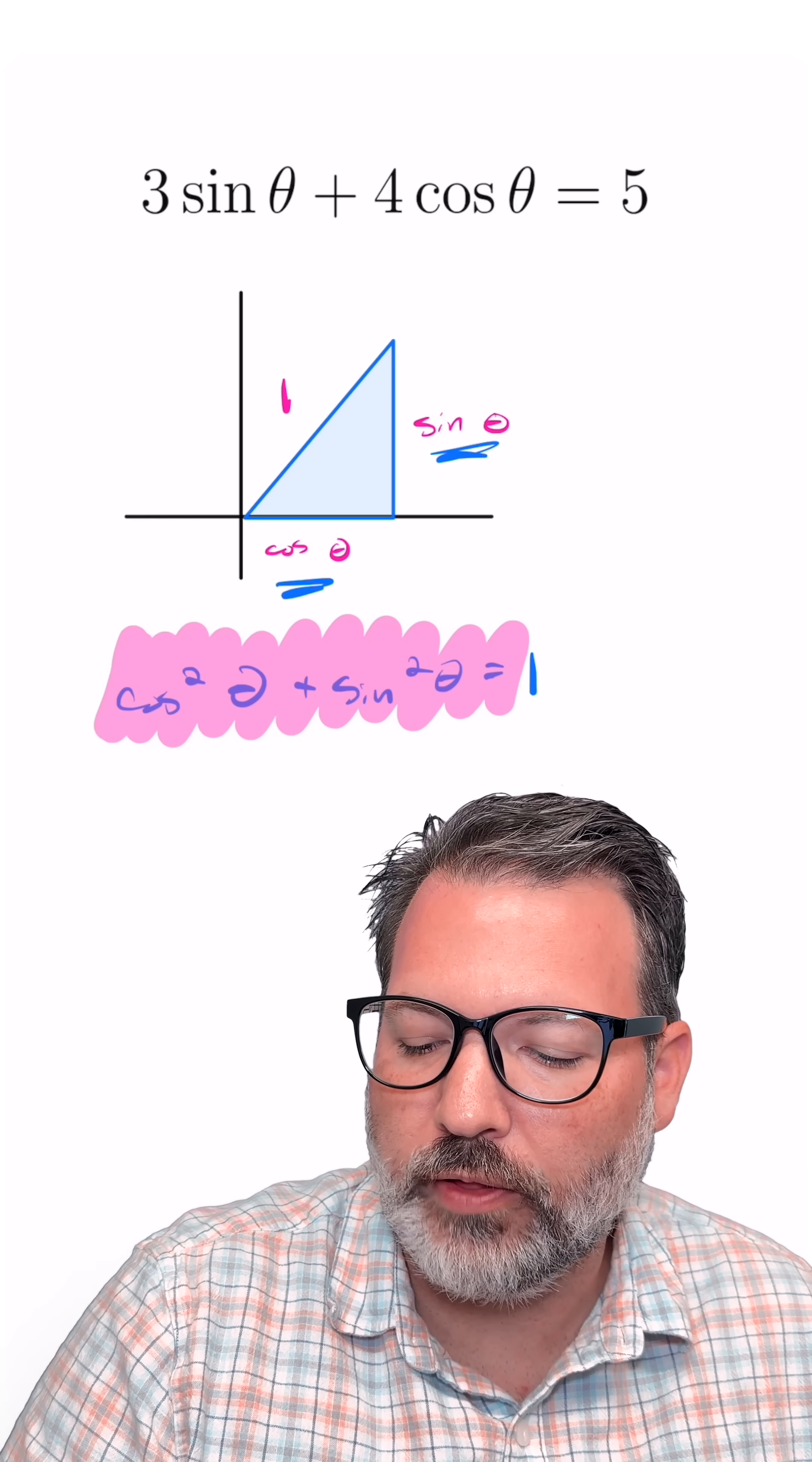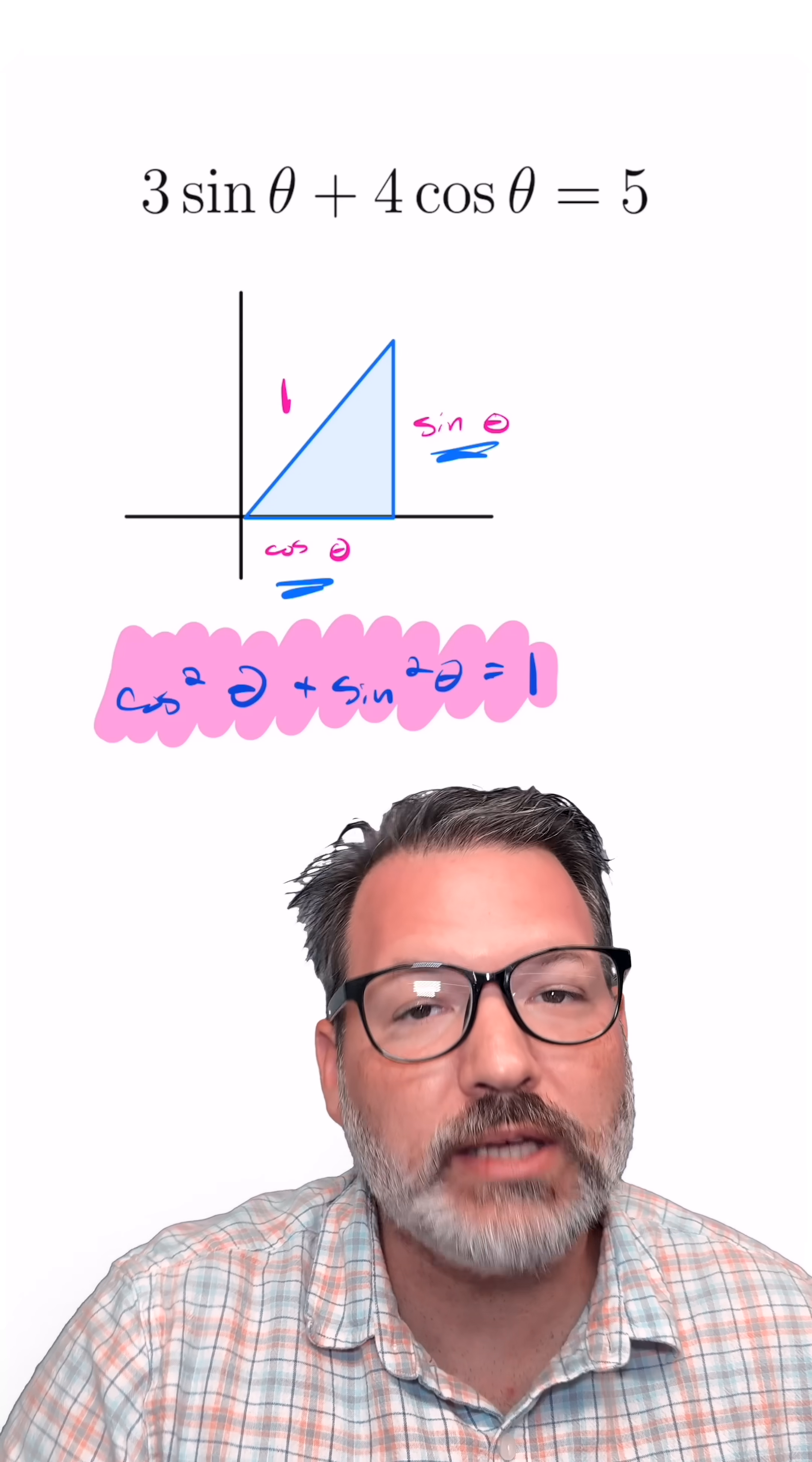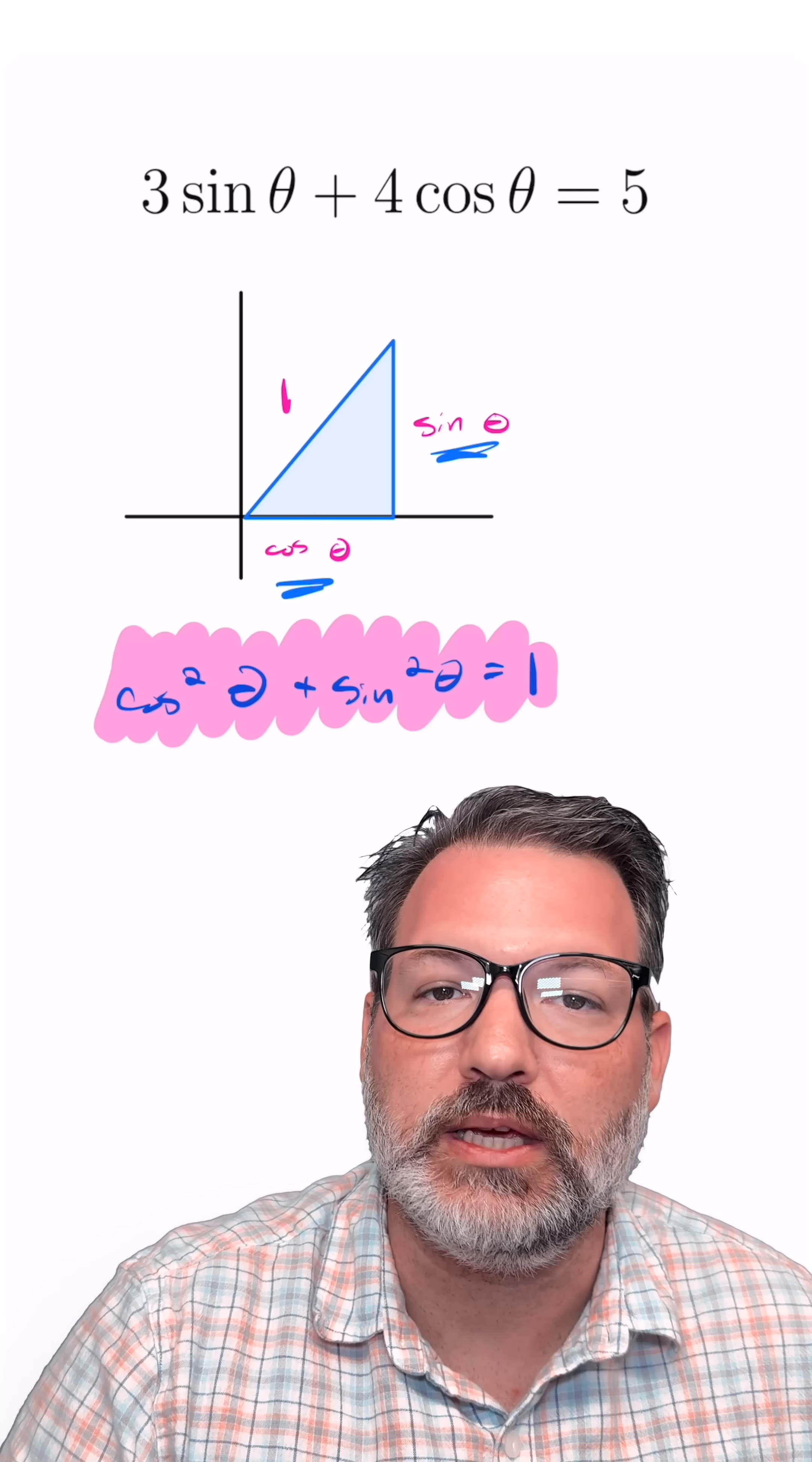and that's exactly what gives us what we call the Pythagorean identity. For any angle theta, the cosine of that angle squared plus the sine of that angle squared will always equal 1.